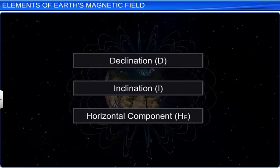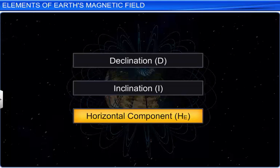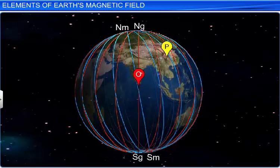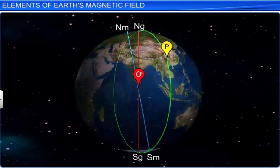The study of these elements helps us define the total magnetic field of the Earth, BE. To find BE at any point on the Earth, we take the help of the third element: the horizontal component of the Earth's magnetic field, HE, at that point. BE and HE are vectors. Let us now construct the vector diagram using all three elements. Locate point P on the globe at which you want to determine the Earth's total magnetic field BE.